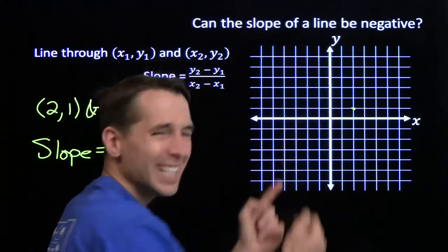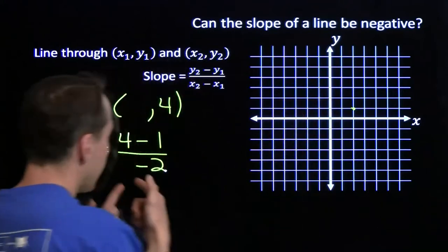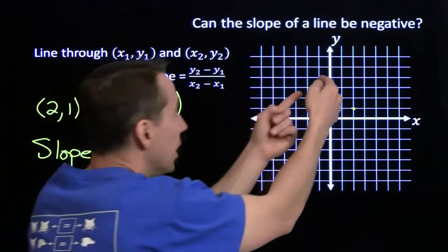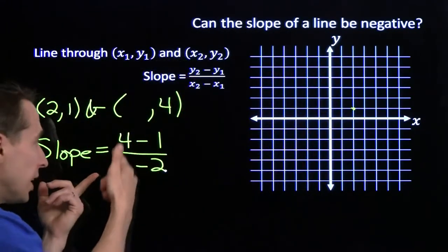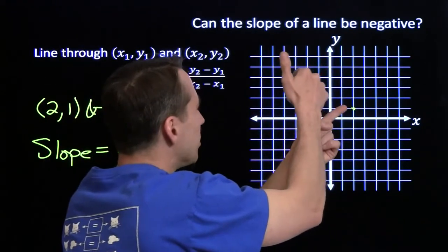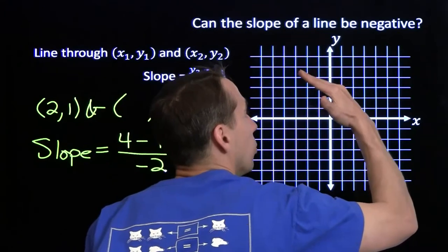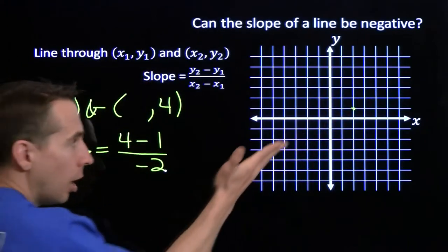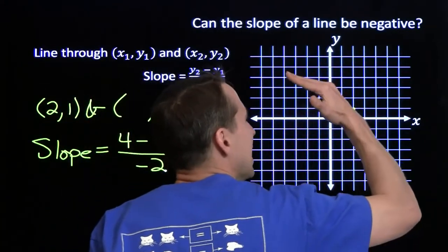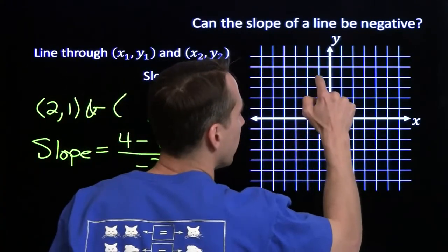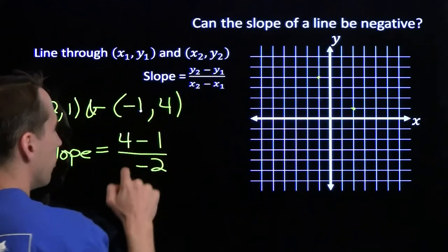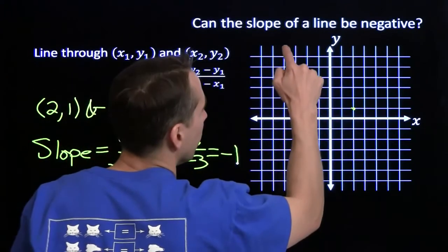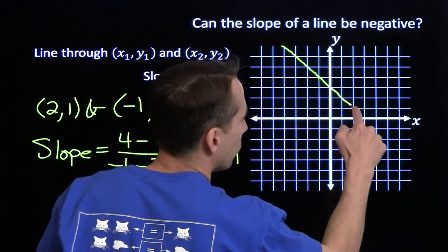But look what happens if I pick a value of x that's less than 2. If I put in 1, for example, I'll get a negative denominator. Numerator is positive, so the slope comes out to be negative — same thing for any of those other points. So points over here to the right give positive, upward-sloping lines, and points to the left give negative, downward-sloping lines. For example, putting in point (-1, 4) gives a slope of 3 over negative 3, which equals negative 1, and sure enough we have a downward-sloping line.